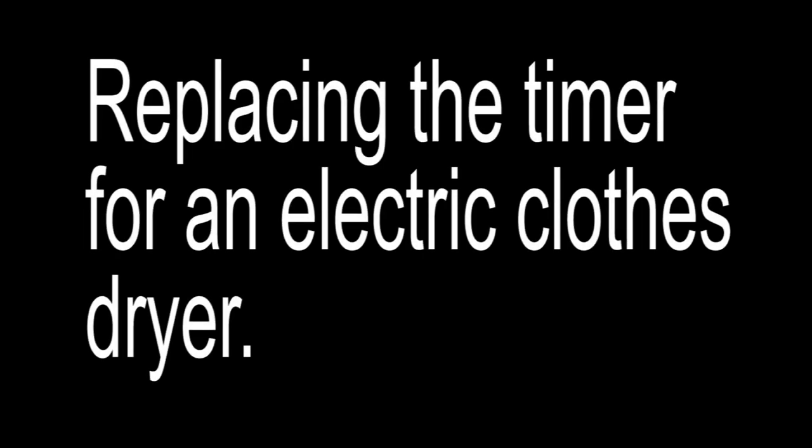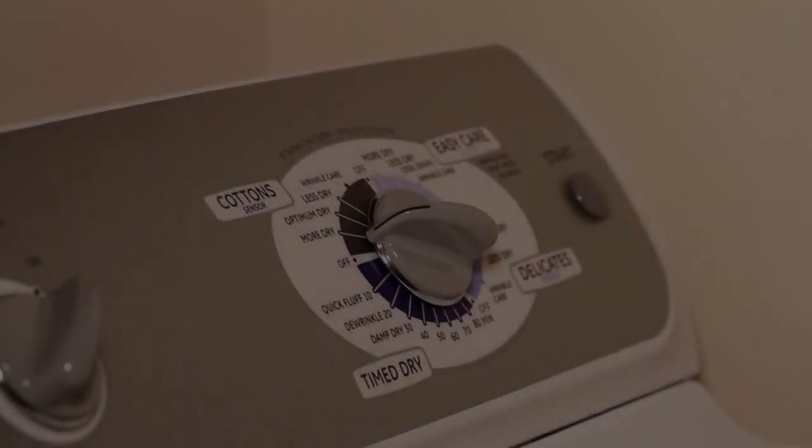If you have an electric clothes dryer where the timer switch is not working correctly, over the next few minutes I will show you how to replace this. I will be using a GE electric dryer, but this could be for a Whirlpool, a Maytag, just about anything—the steps and processes are generally the same.